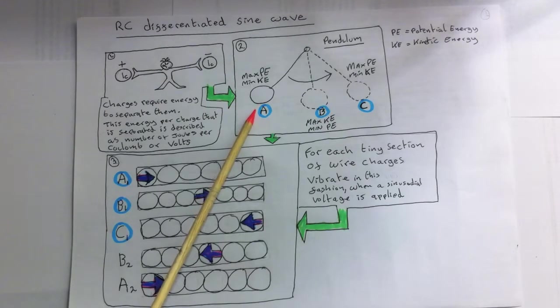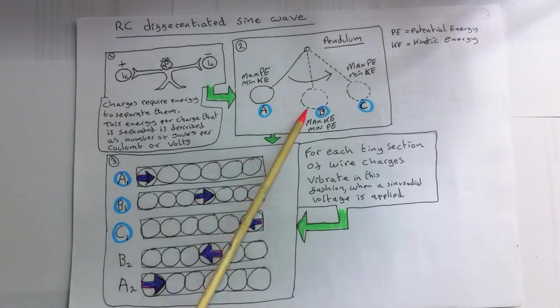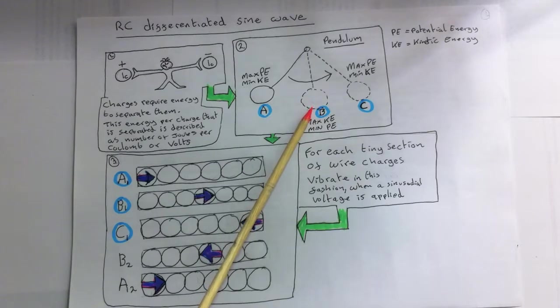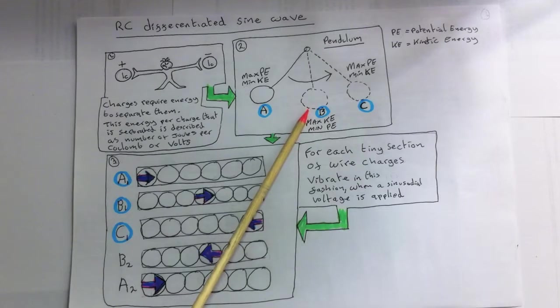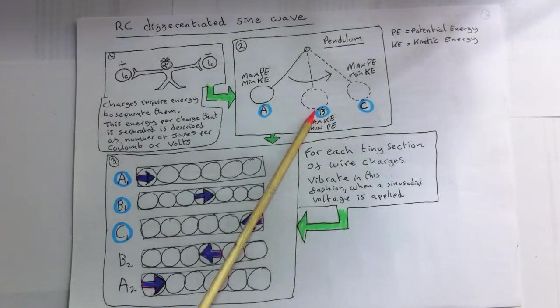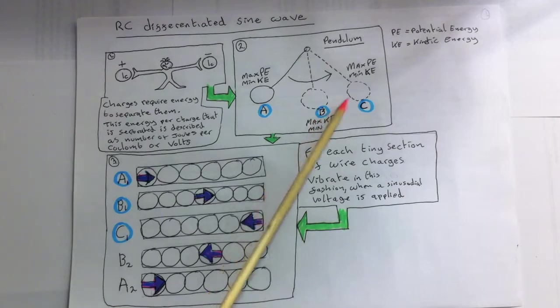We say that here all the energy is its potential energy. When we release the mass, it will swing back to its equilibrium position B. But it won't stop at B, because the mass has converted all of its potential energy into kinetic energy.